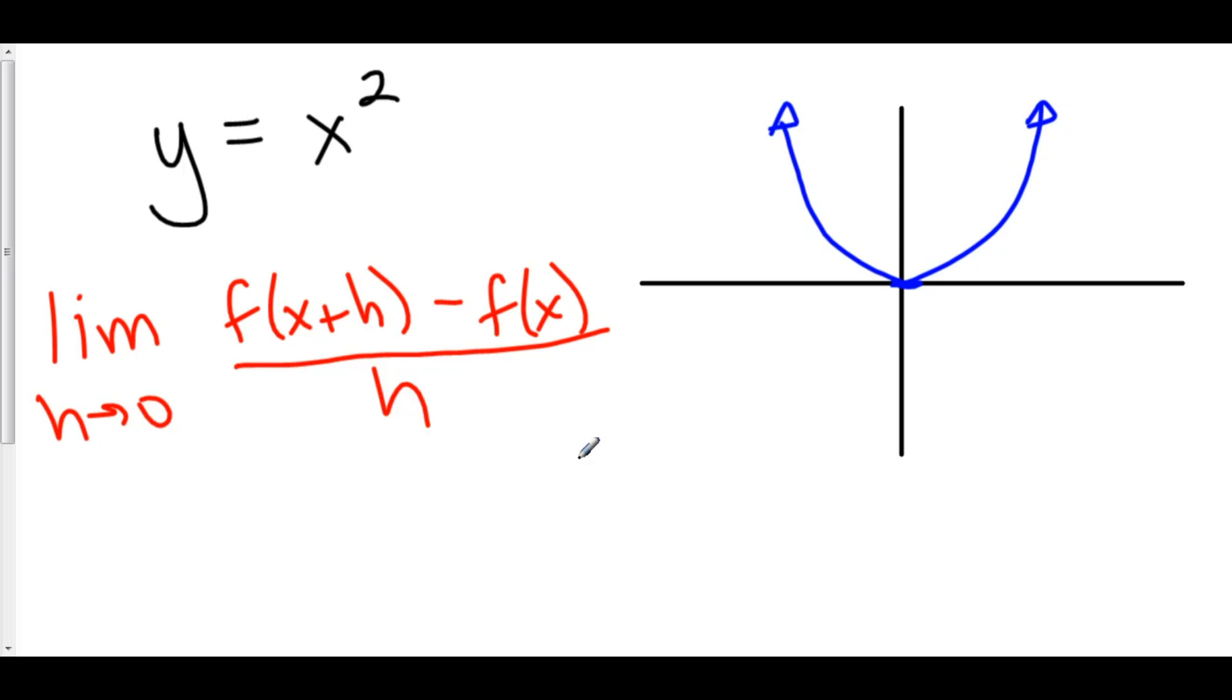Well, remember that when we found the definition of the derivative, we were finding the slope of the tangent line at any point x. So, for example, if I wanted to find the slope of the tangent line at x equals 2 on this graph of x squared, this tangent line would look a little something like this,